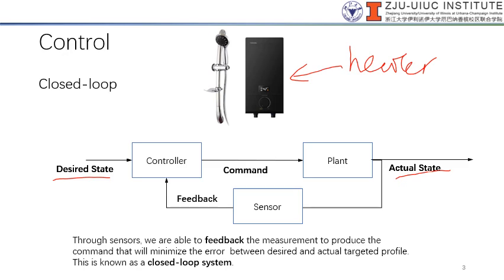So it is through sensors that we are able to feedback this measurement to produce the command that will eventually minimize the error so that the temperature will stay constant. So this is your closed loop system.